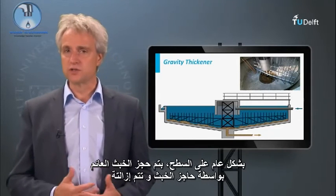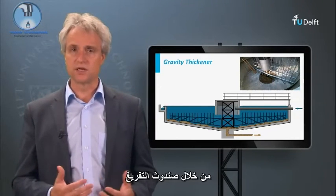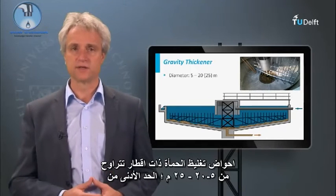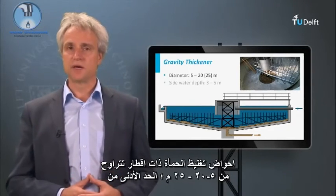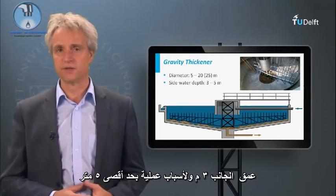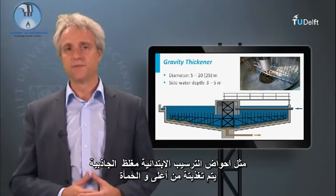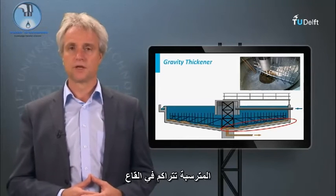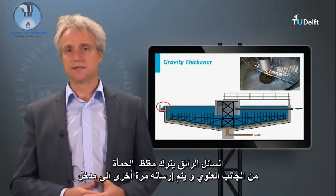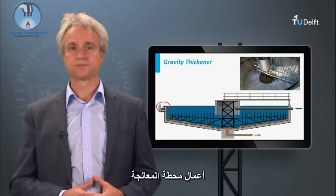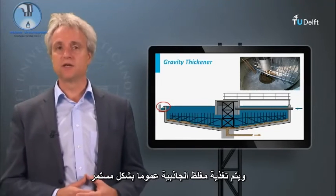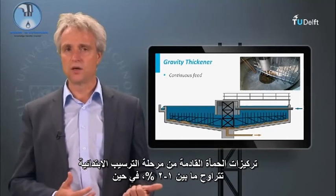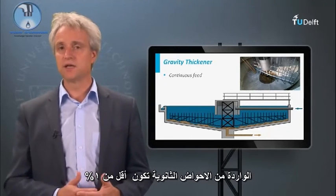In general, at the surface, floating scum is held back by a scum baffle and removed through a discharge drain. Implemented diameters for thickeners vary from 5 to 20–25 meters. The side-water depth amounts to a minimum of 3 meters and a maximum of 5 meters for practical reasons. Similar to a primary clarifier, the gravity thickener is fed from the top and the thickened sludge accumulates at the bottom. The clarified liquid leaves the thickener at the top and is sent back to the headworks of the treatment plant. A gravity thickener is generally continuously fed. Sludge concentrations from primary clarifiers are between 1–2%, whereas from secondary clarifiers these are less than 1%.